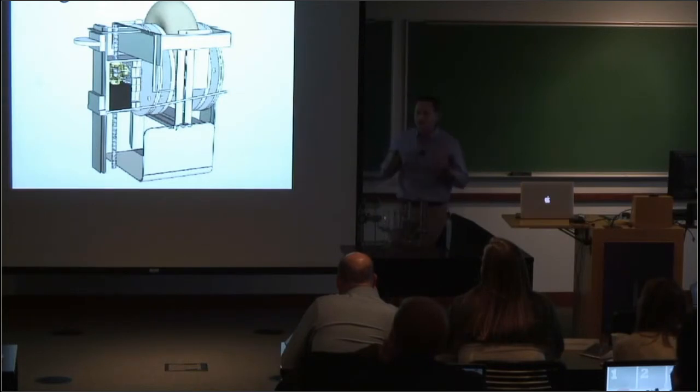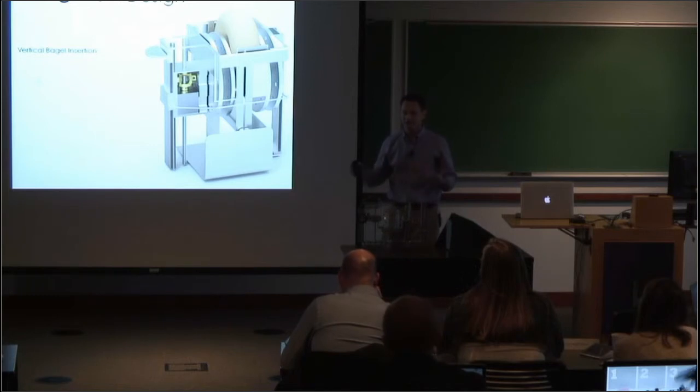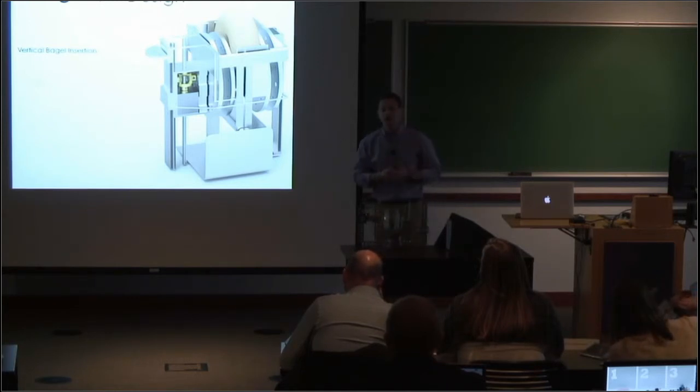So to start, first thing you'll notice is that the bagel goes in from the top. So there's vertical insertion. This is the result of about three or four iterations of major bagel slicing redesigns. Originally, it was a horizontal insertion, but to reduce the footprint, overall footprint of it, I use vertical. But more importantly, to give users a sense of familiarity with how to use the operation, because it resembles a toaster, people immediately know how to use this device.